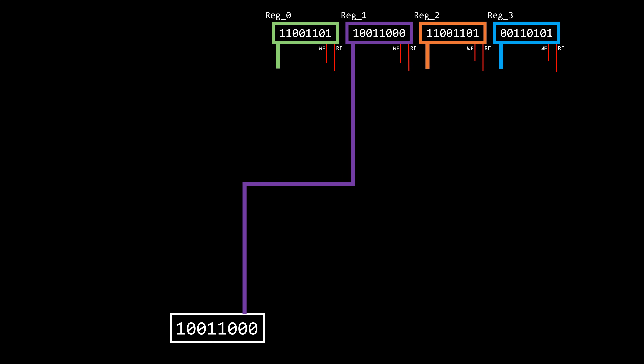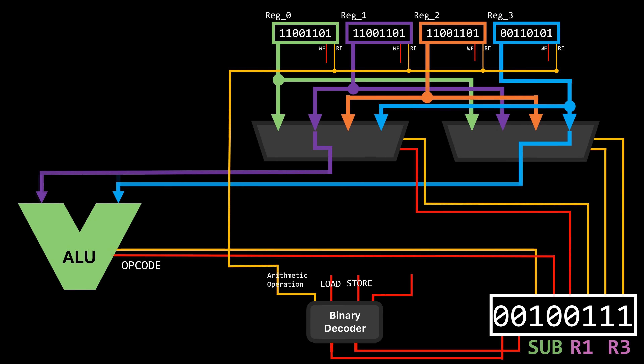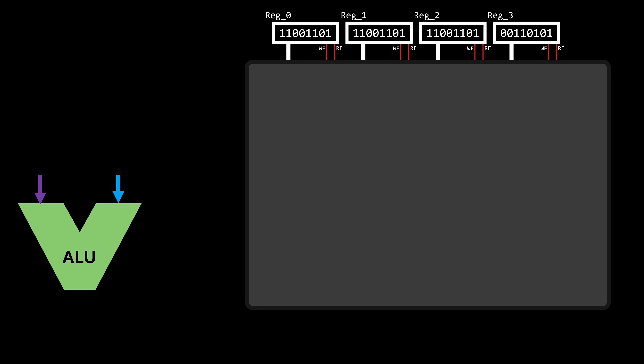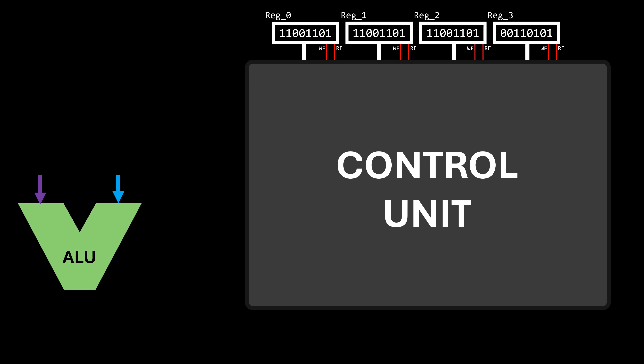At this point, you've probably noticed that as we progress, I'm starting to abstract more concepts and omit some details — this is intentional. I don't have enough screen space to draw every decoder, logic gate, multiplexer, or other component necessary to execute each possible instruction, and 15 minutes wouldn't be enough either. Hopefully, the overview of how load and store instructions are decoded and executed gives you a brief idea of how this component — which we will call the control unit — works under the hood.